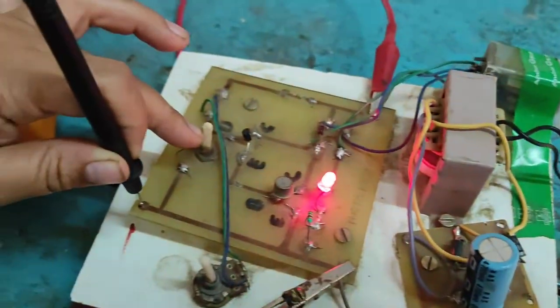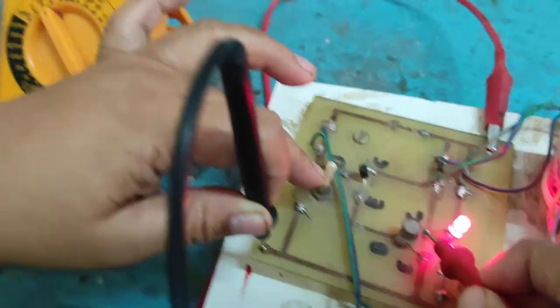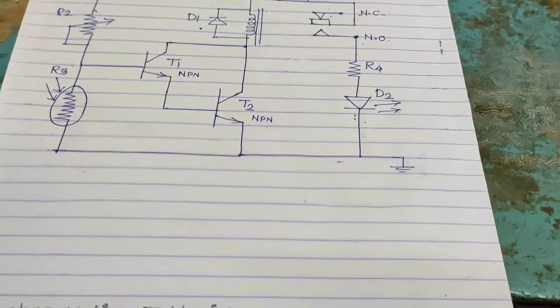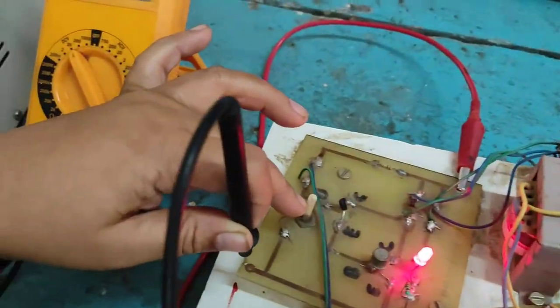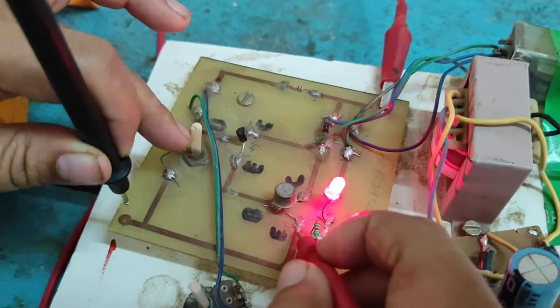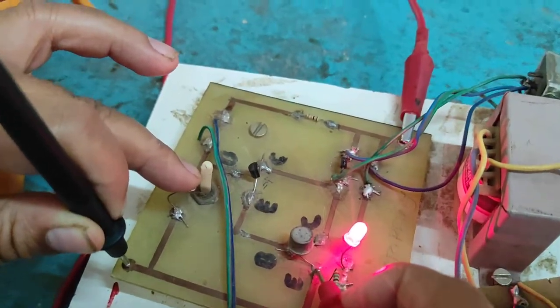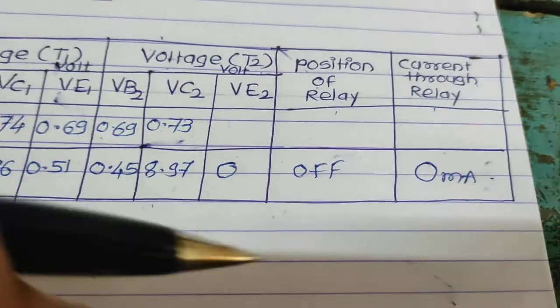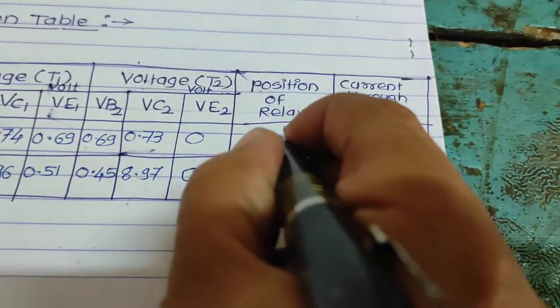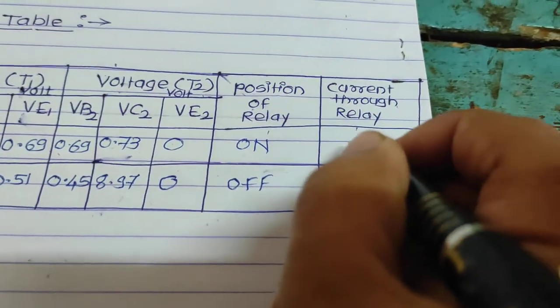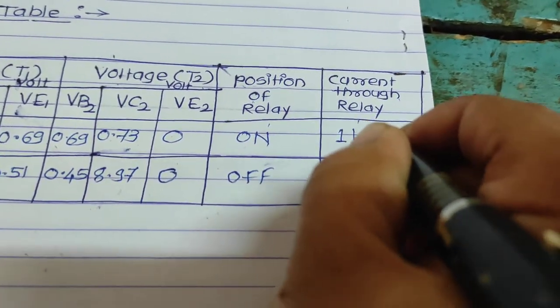VC2 0.73. VE2 0. Position of relay is on. Then current through relay is 110 milliampere.